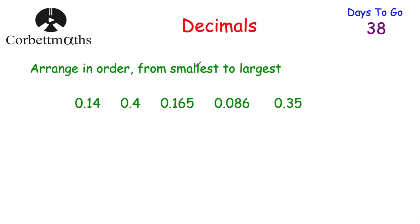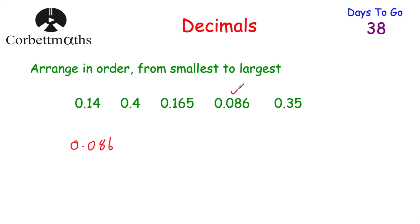Next, let's look at our tenths column. We've got a one, a four, a one, a zero, and a three. Well, zero — that's going to be the smallest. So our smallest number is 0.086. That's our smallest number, so we've done that one.